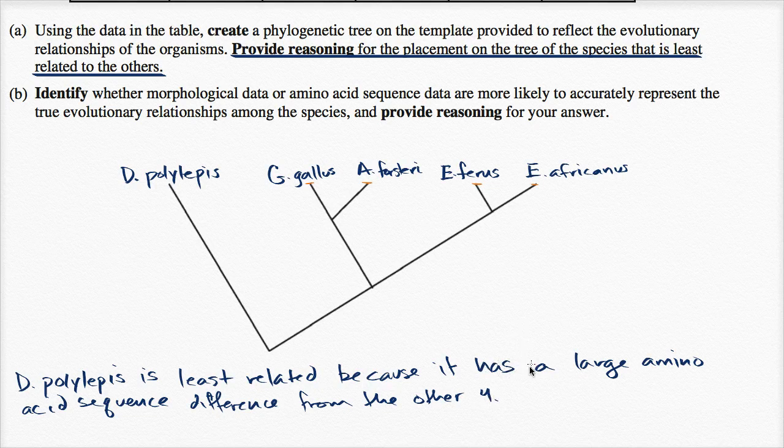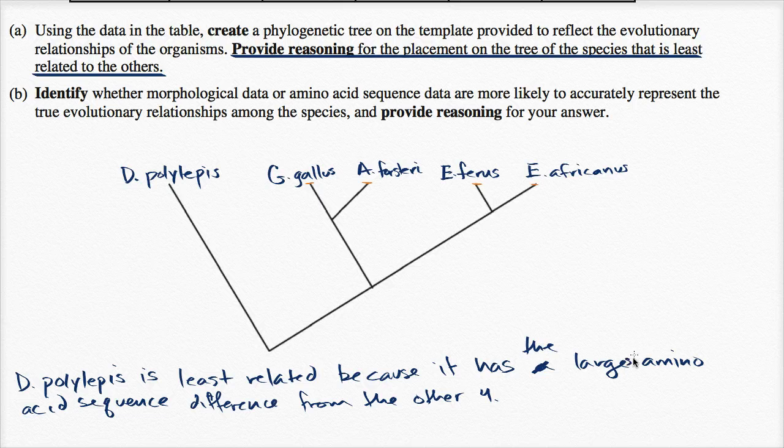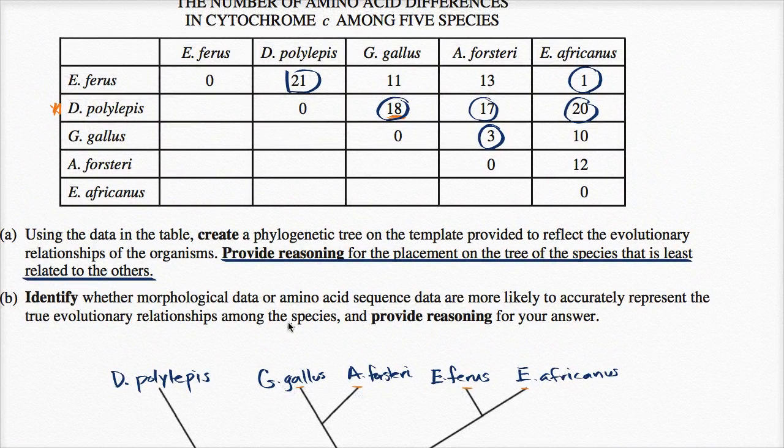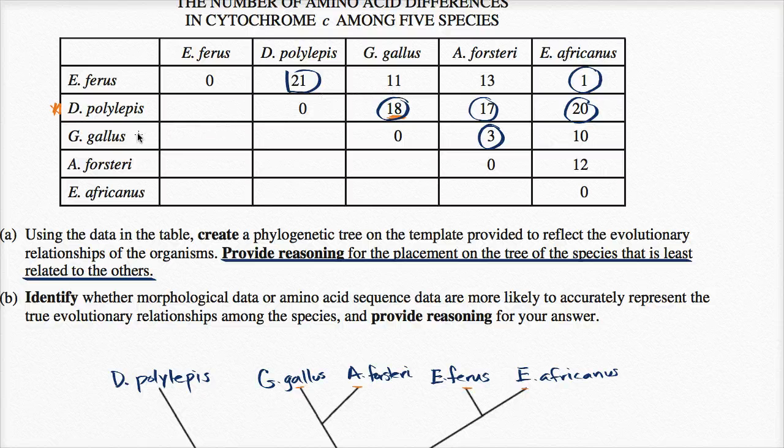Or you can even say, has the largest amino acid sequence difference from the other four. Because even if you were to compare E. ferrous to G. gallus, you still don't get close to 20, while D. polylepis is pretty close to 20 difference with all of them.